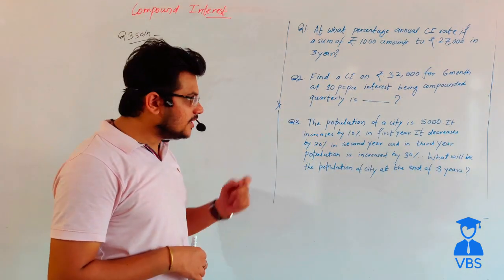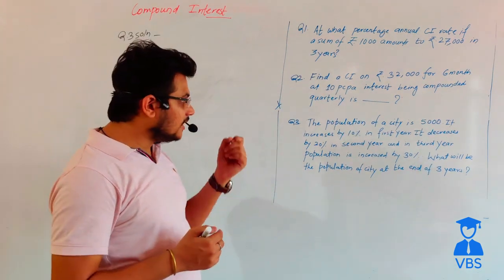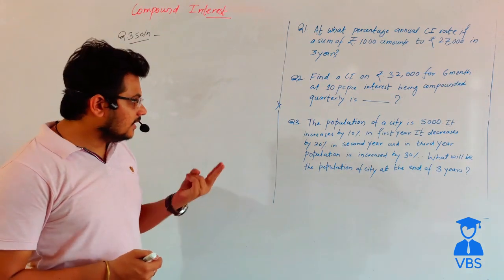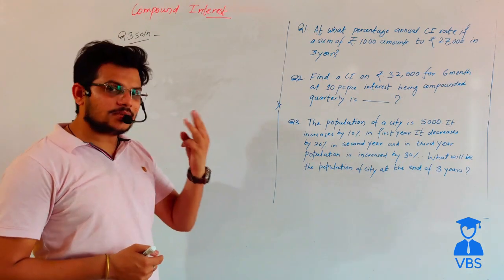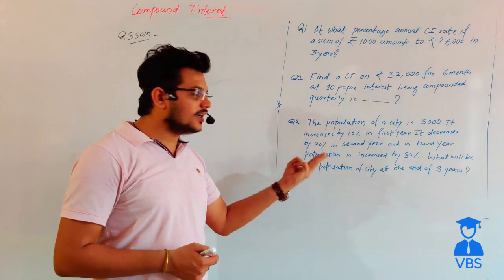The population of a city is 5000. It increases by 10% in the first year, decreases by 20% in the second year, and in the third year the population increases by 30%. What will be the population at the end of 3 years?